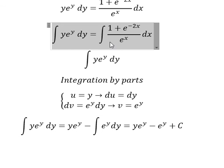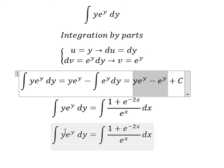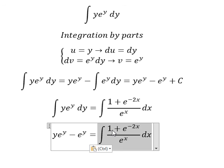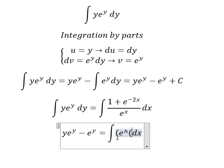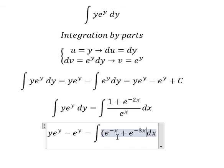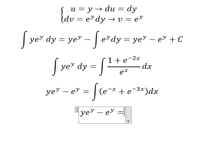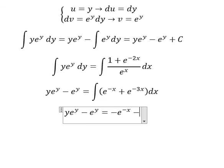Now we go back to the right-hand side. We put this result in here. We have 1 divided by e to the power of s, and this one divided by e to the power of s. We get e to the power of negative s plus e to the power of negative 3s. The final answer is negative e to the power of negative s, minus e to the power of negative 3s over 3.